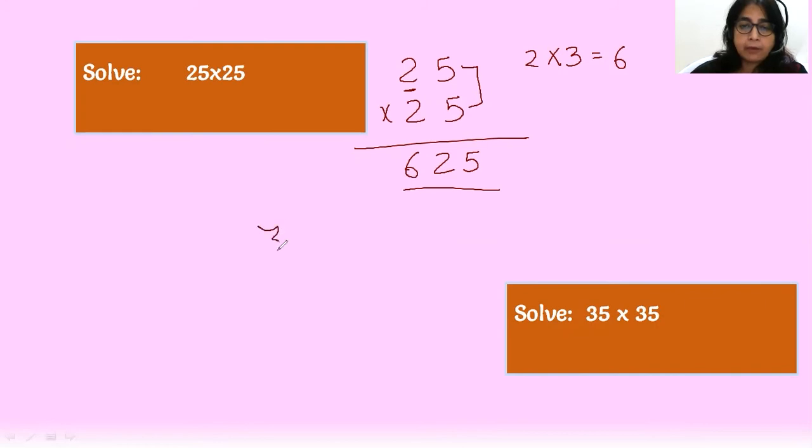Again, 35 into 35. Only the one step, same process, the number ending with 5. You have to take care of this step in the number ending with 5. This is the square of a number ending with 5. This trick goes with the number ending with 5.